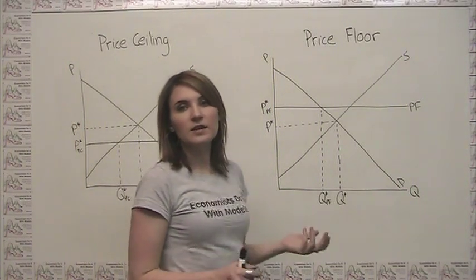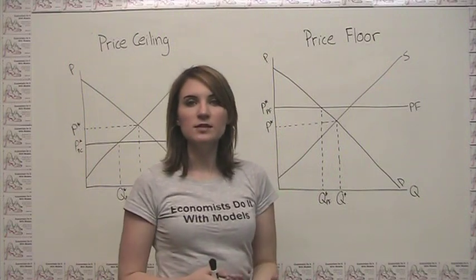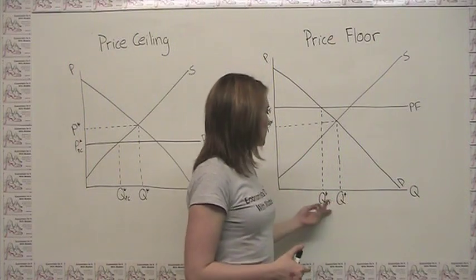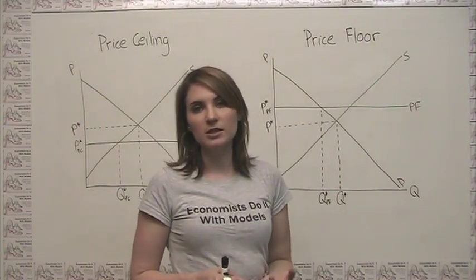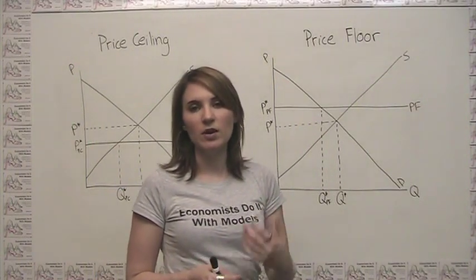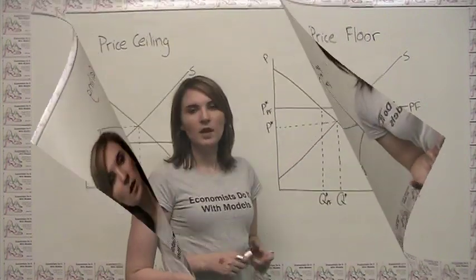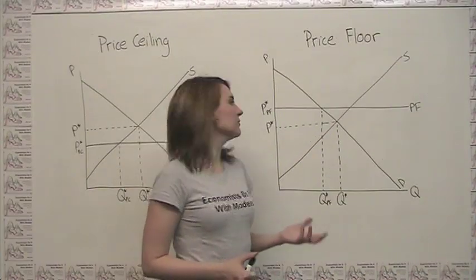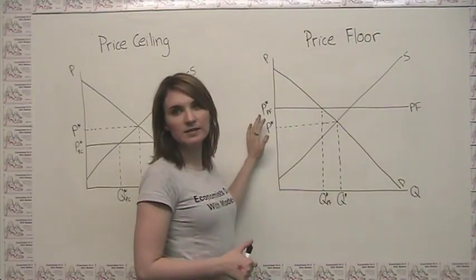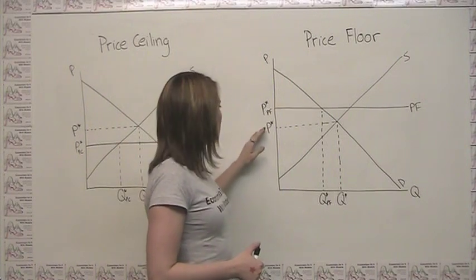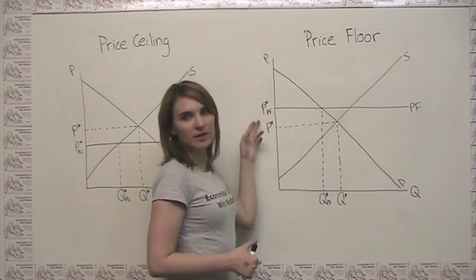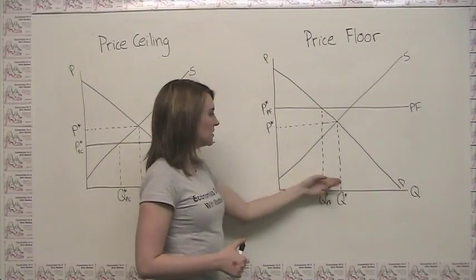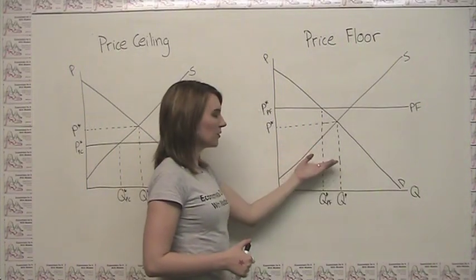So when deciding what to do in terms of policy, you want to think about not only do we get the quantity reduction that we are looking for, but do we get the quantity reduction via a price increase or a price decrease? It's a little bit counterintuitive to ever want to put a price floor in place because one of the questions that people could ask is why are you resorting to raising the price in order to limit the quantity when you could be lowering the price to limit the quantity instead?